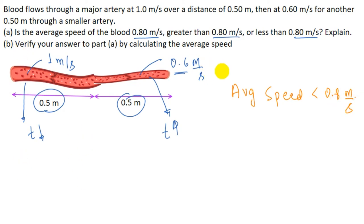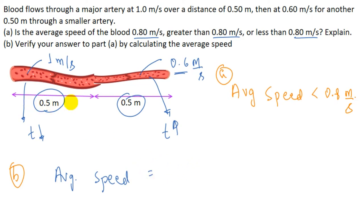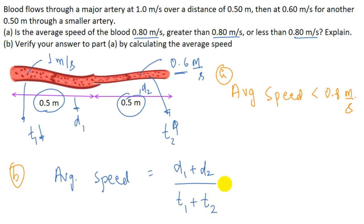For part b, we verify part a by calculating the average speed. Average speed equals total distance d1 + d2 divided by total time t1 + t2. d1 + d2 equals one meter total. Time t1 equals d1 over s1 and t2 equals d2 over s2, so the denominator is (d1/s1) + (d2/s2).